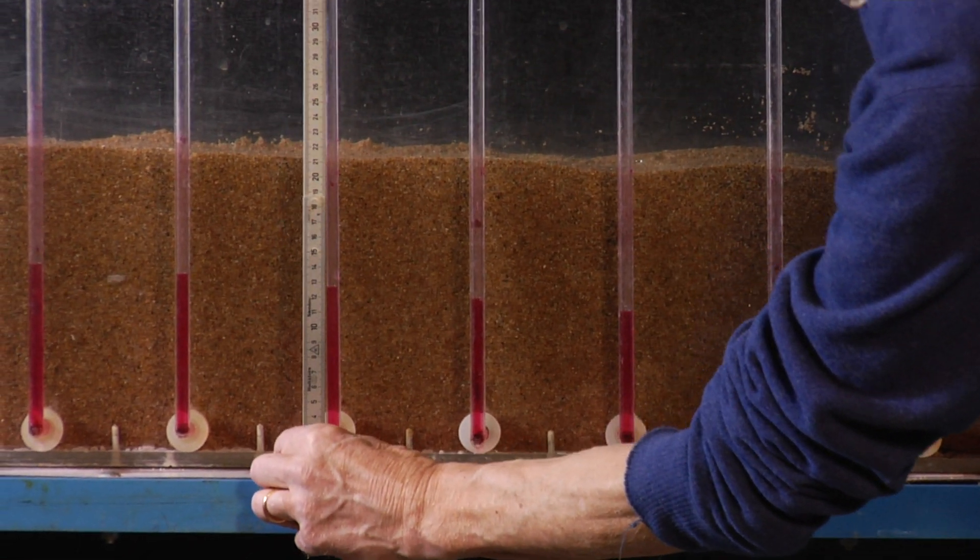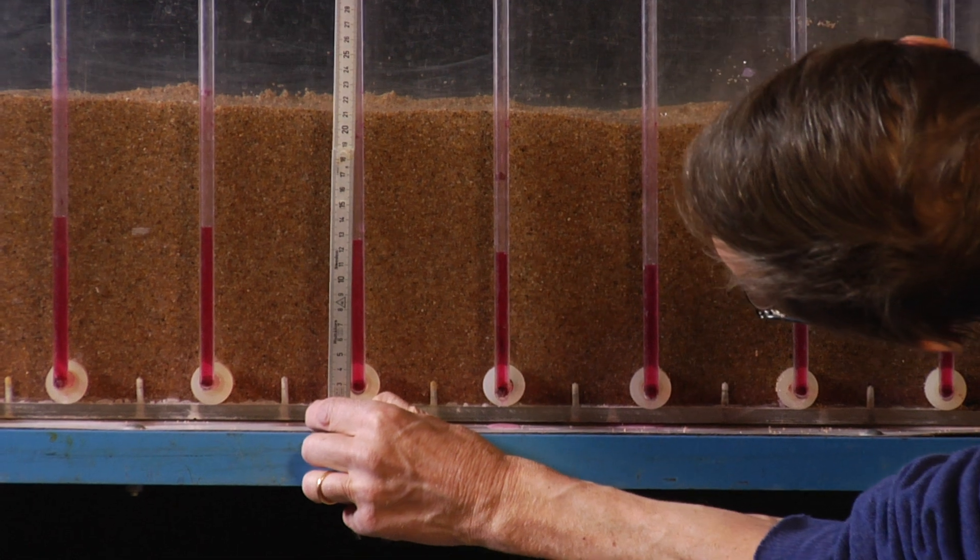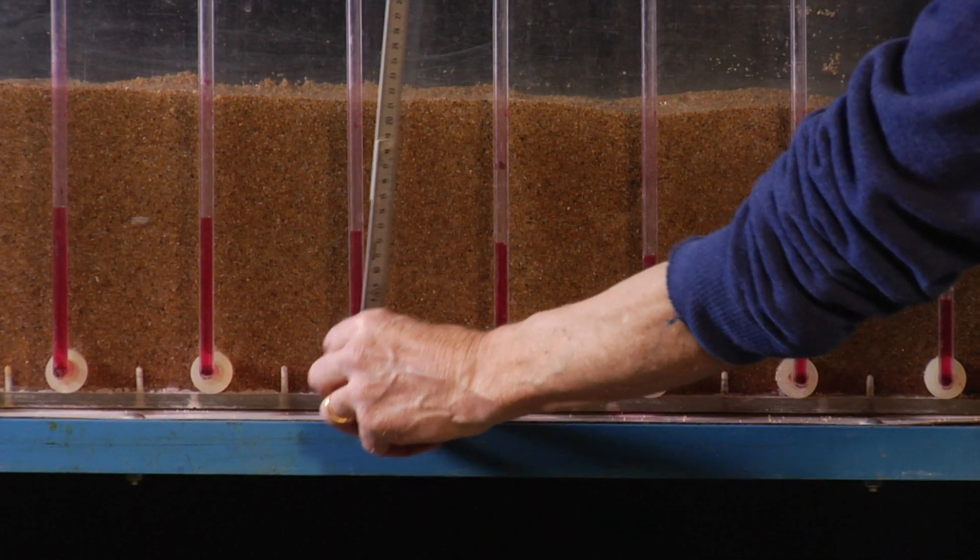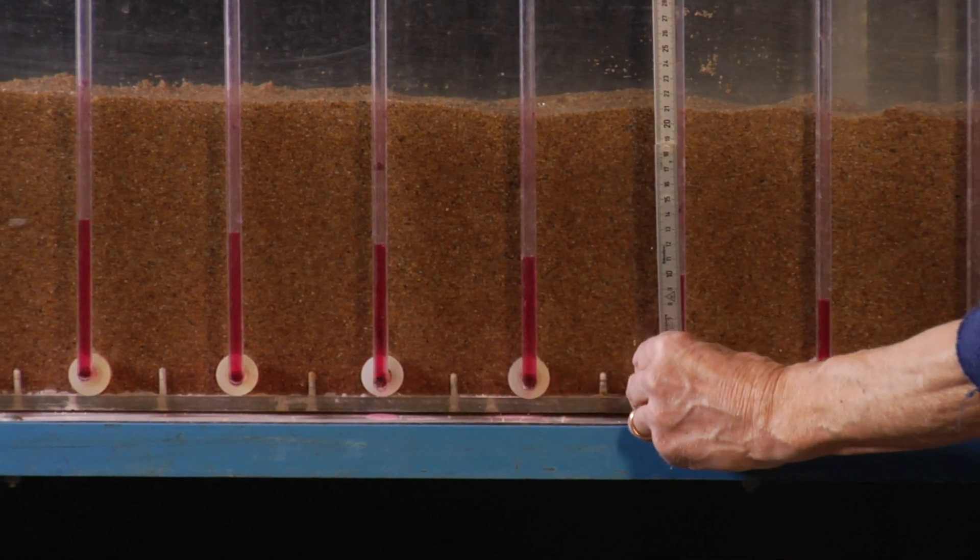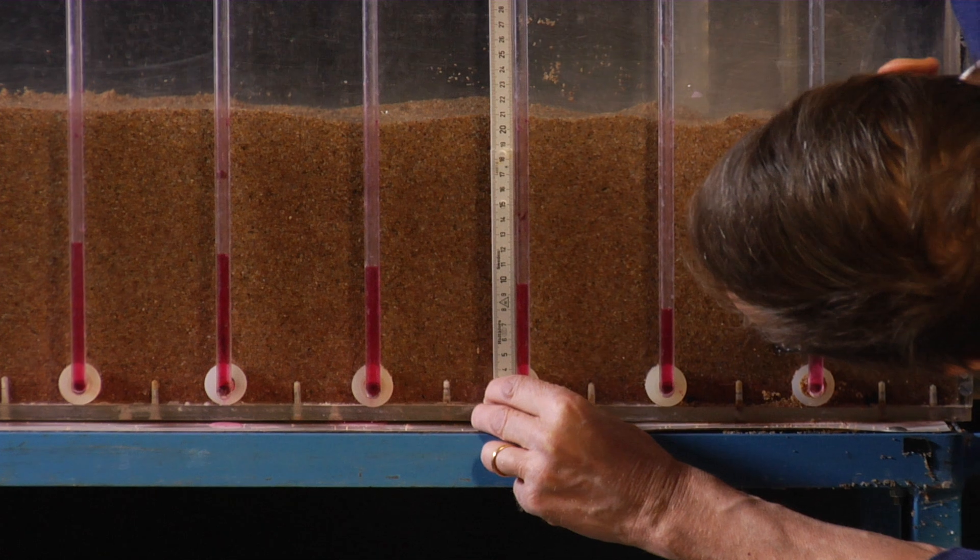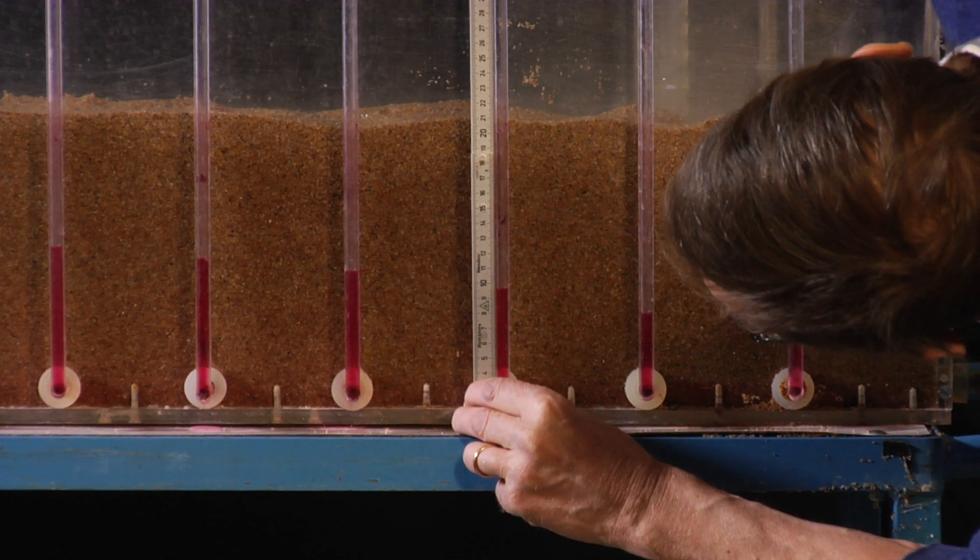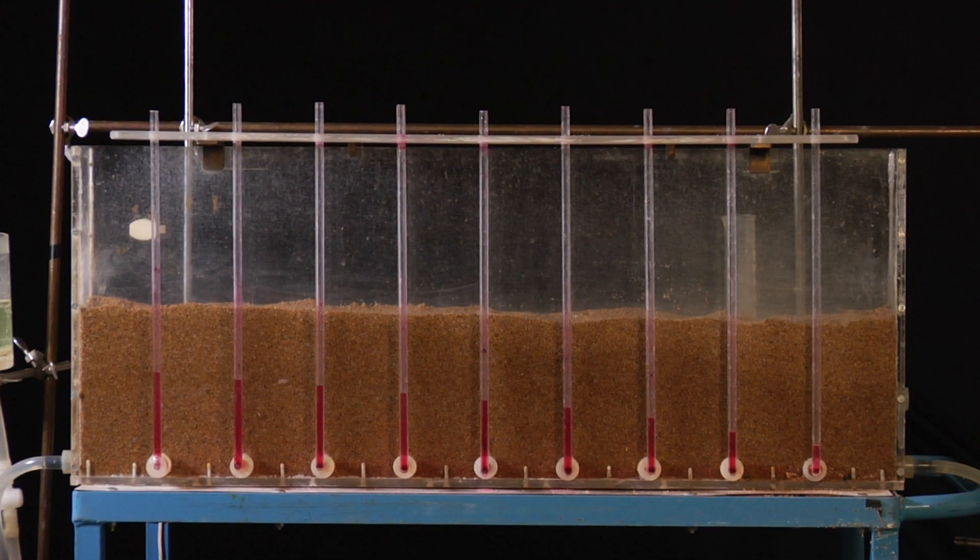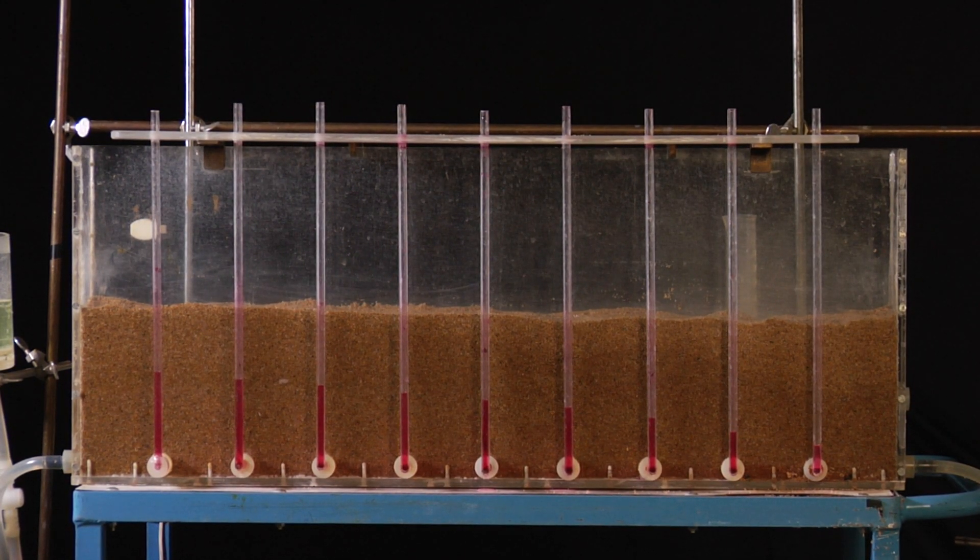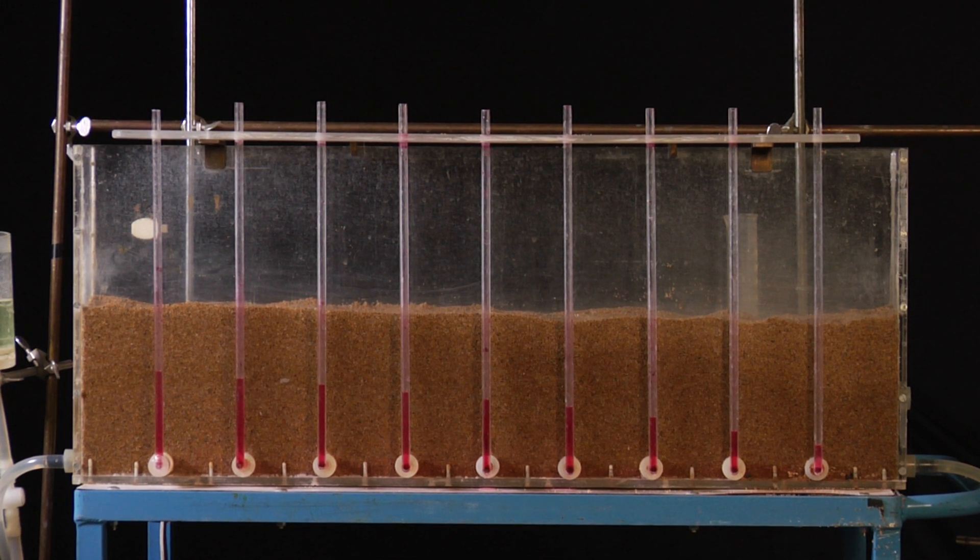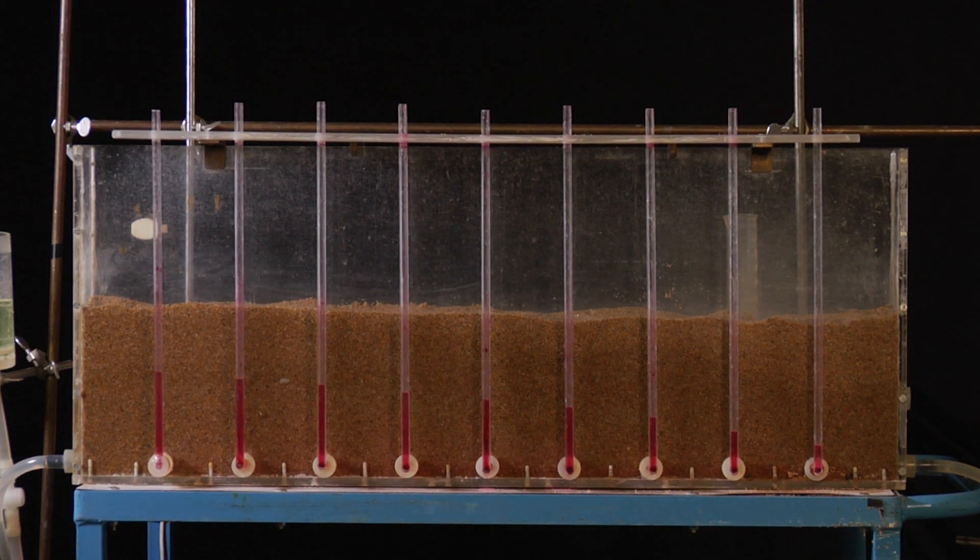Now I measure the groundwater level in two observation tubes. H1: 12.7 centimeters above the table and H2: 9.8 centimeters. To get the thickness of the groundwater zone, we have to subtract the height of the aquifer bottom above the table, and this is 1.5 centimeters.